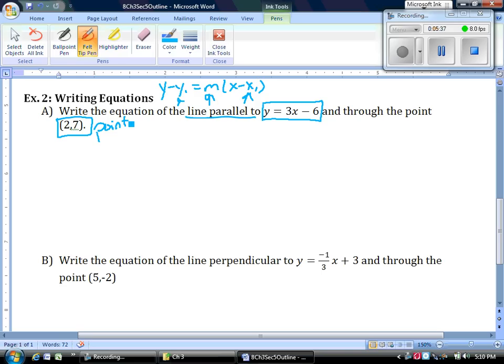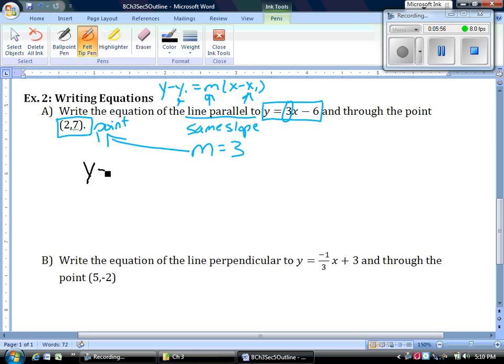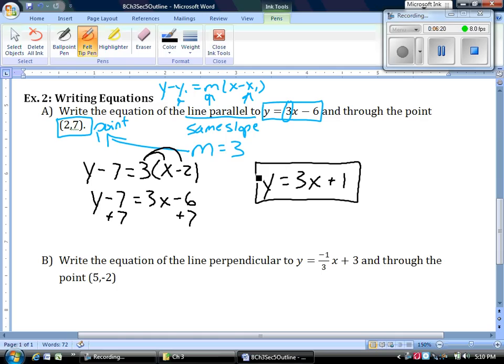Since we want parallel, we want the same slope. So our slope here is three, which means the one I'm going to use is three. Let's go ahead and plug it in. Y minus seven equals my slope is three times x minus two. From there, we simplify it by distributing. Y minus seven equals three x minus six. Add seven to both sides to get y equals three x plus one. And there's the equation that's parallel to that, but through the point (2,7).